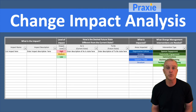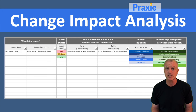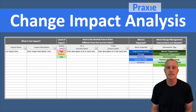Others might have no change at all, or maybe something just very minor. The idea here is that you list the stakeholders, list the impacts, and classify different types of impacts — it can be a process change, technology adoption change, org structure change, or whatever it might be.